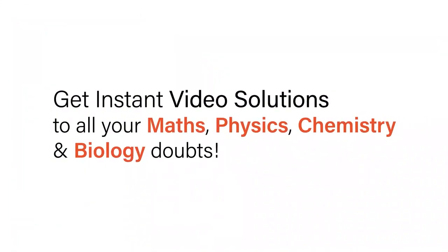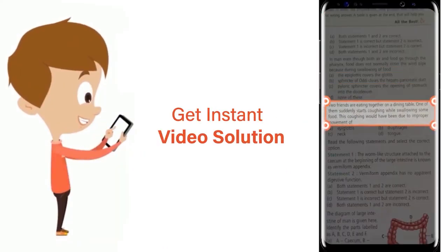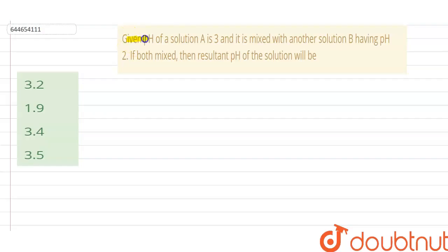With Doubtnut, get instant video solutions to all your maths, physics, chemistry, and biology doubts. Just click the image of the question, crop the question, and get instant video solution. Download Doubtnut app today. Hello, so our question is: given pH of a solution A is 3 and it is mixed with another solution having pH 2.